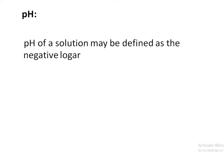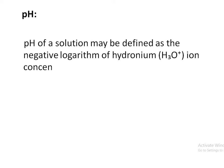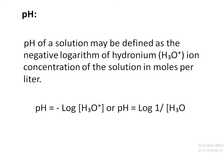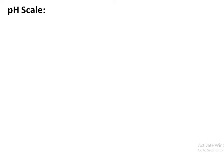The pH of a solution may be defined as the negative logarithm of hydronium ion concentration of the solution in moles per liter. That means pH is equal to negative log of [H3O+] concentration, or equivalently, log of 1 divided by hydronium ion concentration. Hydronium ion concentration represents the H+ ion concentration.